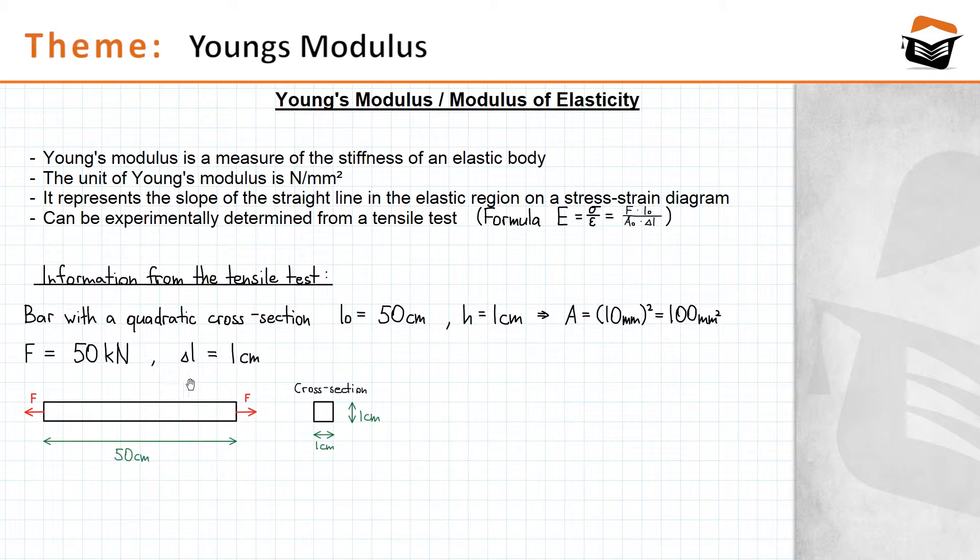The bar has a quadratic cross-sectional area, and the width and the height of the cross-section are one centimeter respectively. That means that the cross-sectional area of this bar is one square centimeter or 100 square millimeters. We will be using the unit square millimeters because that's part of the unit of stress.